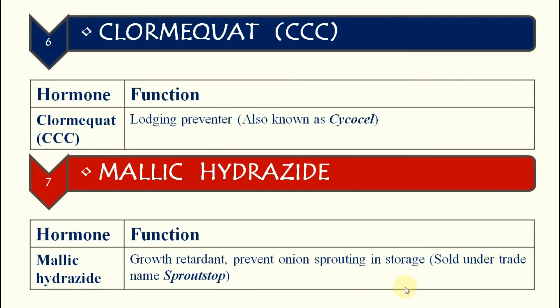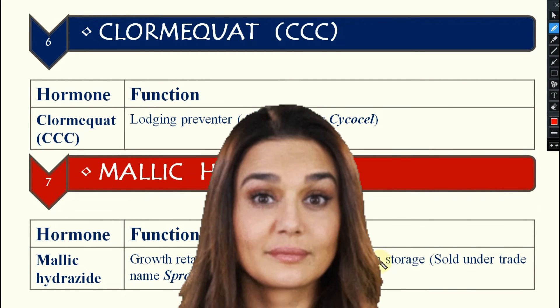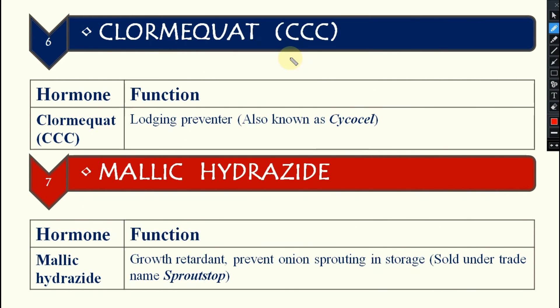Next is chlormequat, also known as CCC or Cycocel. It is used to prevent lodging — if a plant is undergoing the lodging effect, you can apply chlormequat or CCC.